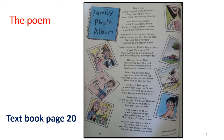Sixth stanza: 'This is my brother Jake — that time he broke his leg. And dad wrote on the plaster: Here comes Jake the pig.' The writer's brother is Jake. He broke his leg, and their father wrote 'Here comes Jake the pig' on his plaster. You can see in the picture his leg is like a peg, so you can hang anything there.